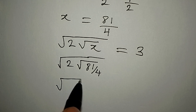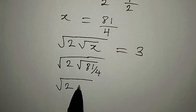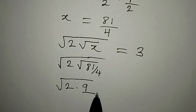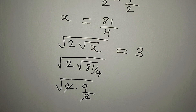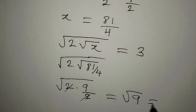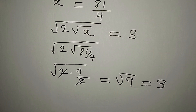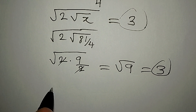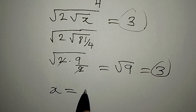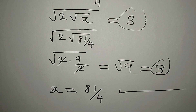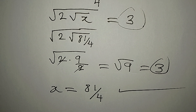We have square root of 2 multiplied by square root of 81 over 4. Square root of 81 is 9 and square root of 4 is 2. These cancel out and we have just square root of 9, which is equal to 3. So x equals 81 over 4 is confirmed correct. Thank you for watching.